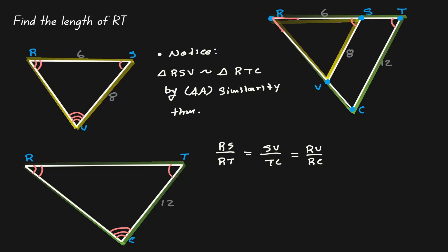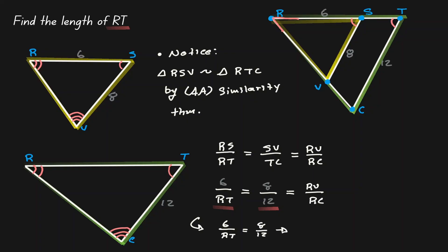Let's place the information we know: RS is 6, RT is unknown. SB has a length of 8 and TC has a length of 12. RB and RC are both unknown. Since RT is on the first proportion, let's set it equal to the second proportion, whose value we know. Cross multiplying gives us 6 times 12 equals 72, which equals 8 times RT. Dividing both sides by 8 gives us RT.